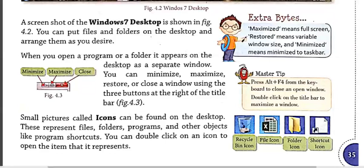The next one is the Close button. The button with a cross symbol is called the Close button. Clicking on it will close the application. There is also a shortcut key, Alt+F4, which is used to close any window. For maximizing the size of a window, just double click on the title bar and the window will be maximized automatically.